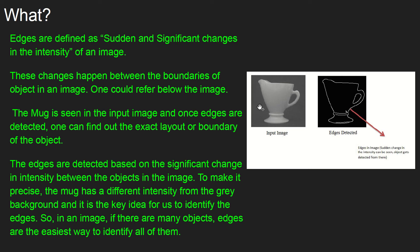It is mostly grayish in color and there is a sudden change in the intensity when it becomes the white mug, and that's what is retrieved — that is called an edge. Very simple. The edge is nothing but the boundary or the layout of an object. Edges are detected based on the significant change in intensity, and the mug has a different intensity — white color — which is different from the layer outside.